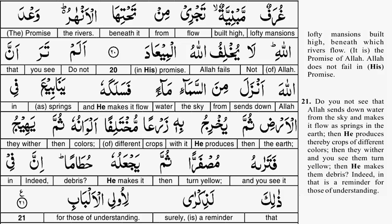Mukhtalifan alwanuhu — different in its colors, of varying colors. If you think about it, which two leaves are exactly the same color? They're not. And when it comes to crop, just go to a grocery store and you'll see a rainbow of colors — it's amazing. But then, thumma yahiju — it withers, it dries up. Ha'ij is grass which is dried and withered. Yahij refers to when plants naturally dry out and wither.